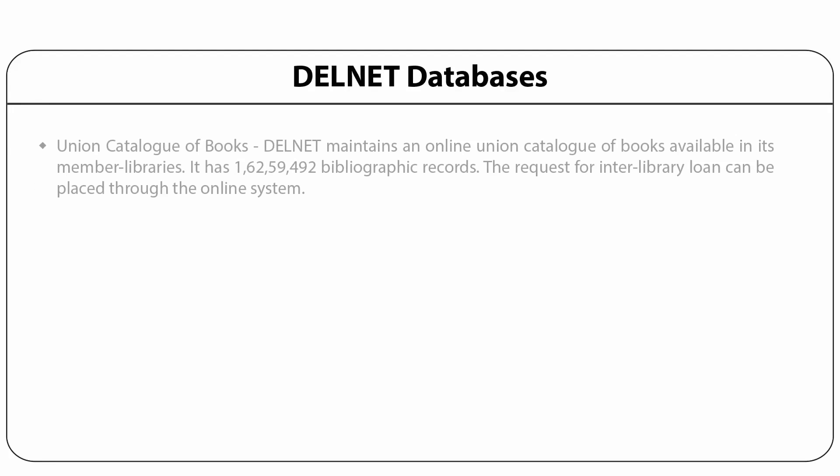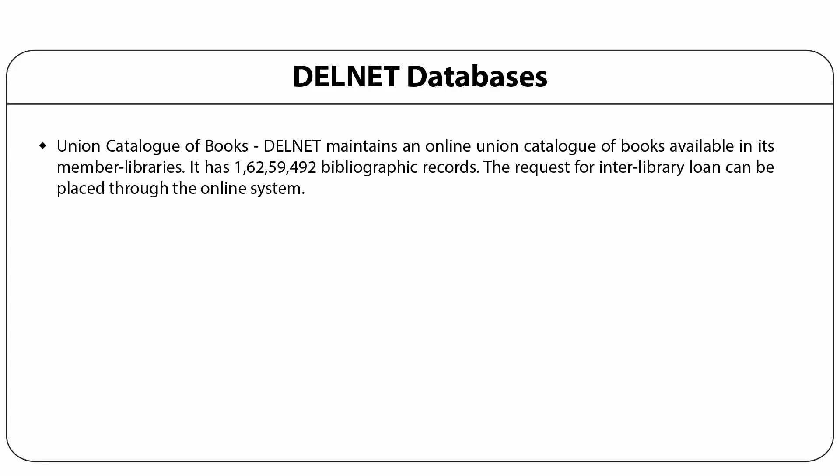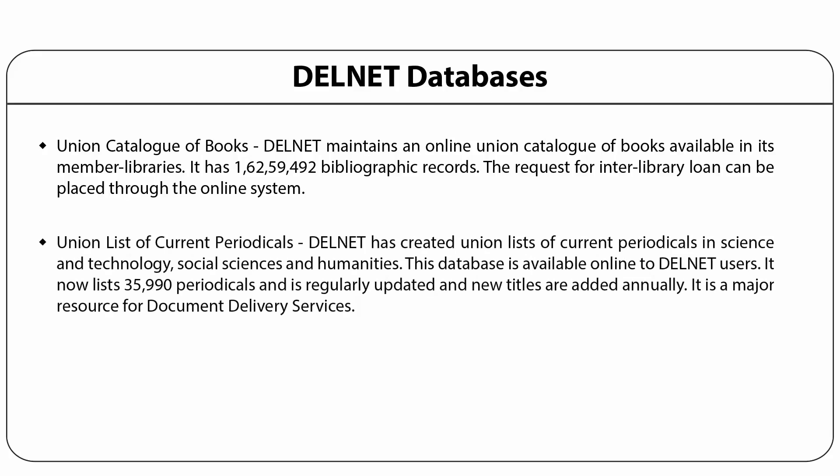The Union Catalogue of Books maintains an online union catalogue of books available in member libraries. Information can be retrieved by author, title, subject, conference, series, etc. It has 1 crore 62 lakh 59,492 bibliographic records. Requests for interlibrary loan can be placed through the online system. DELNET also has union lists of current periodicals in science and technology, social sciences, and humanities, now listing 35,990 periodicals, regularly updated with new titles added annually.